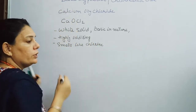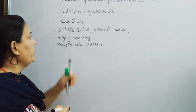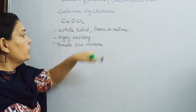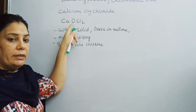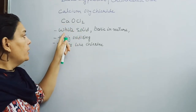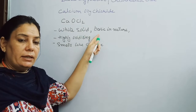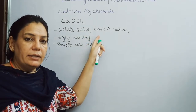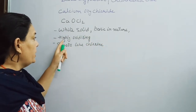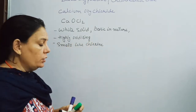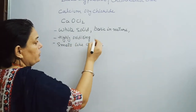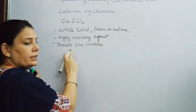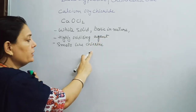To recap: Bleaching Powder, also called Chlorinated Lime, has chemical name Calcium Oxychloride with formula CaOCl2. It is a white crystalline solid, basic in nature, and a highly oxidizing agent — the reason being the formation of chlorine gas — and it also smells like chlorine.